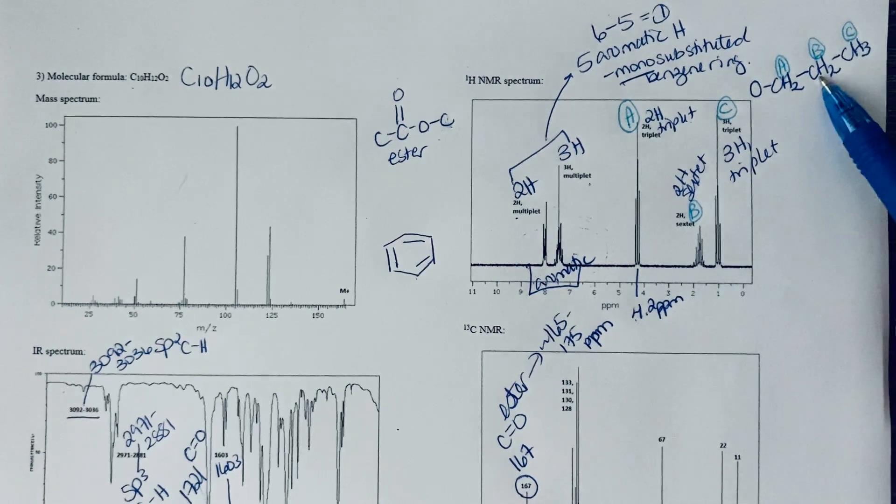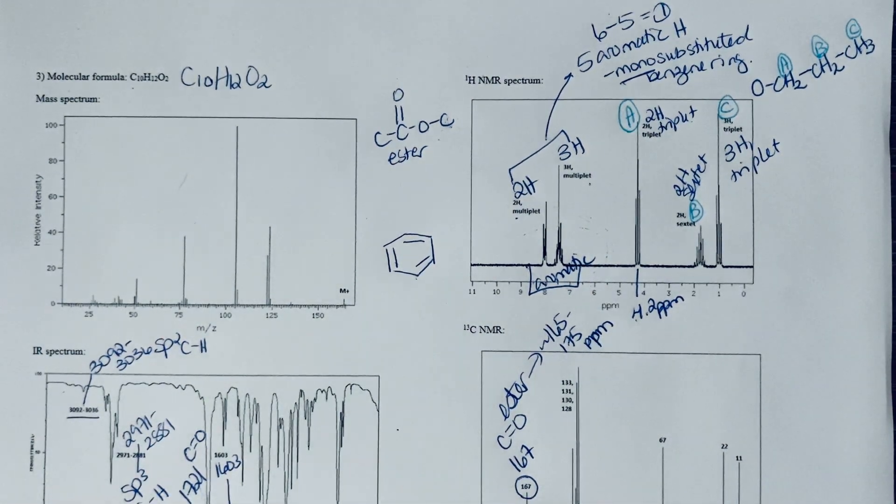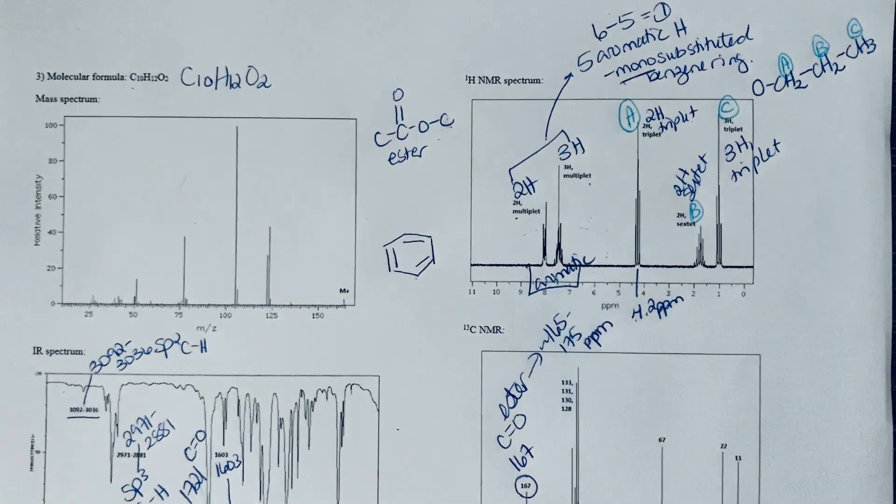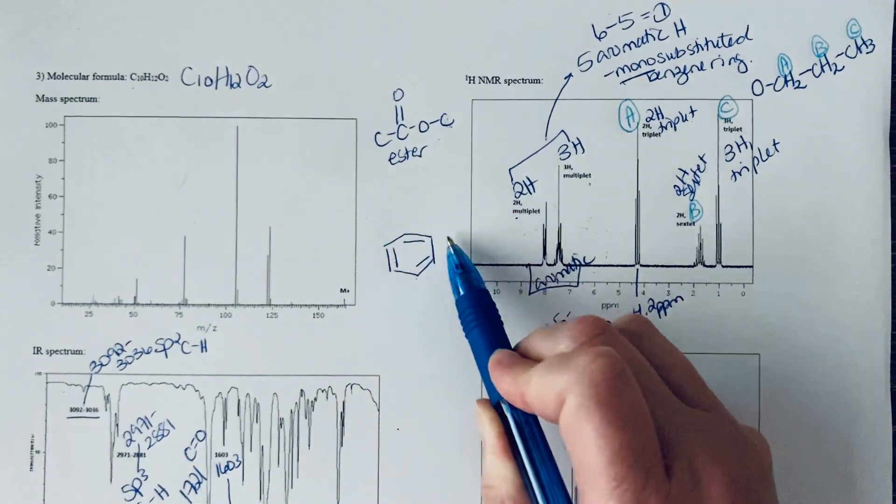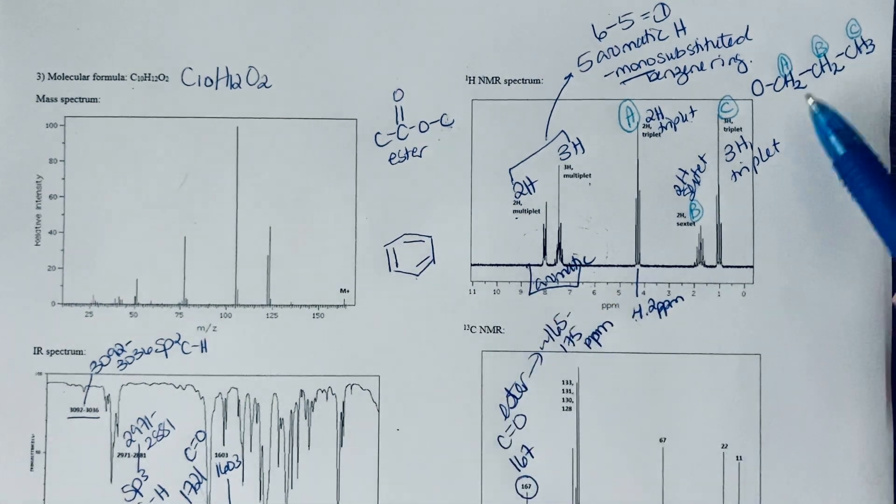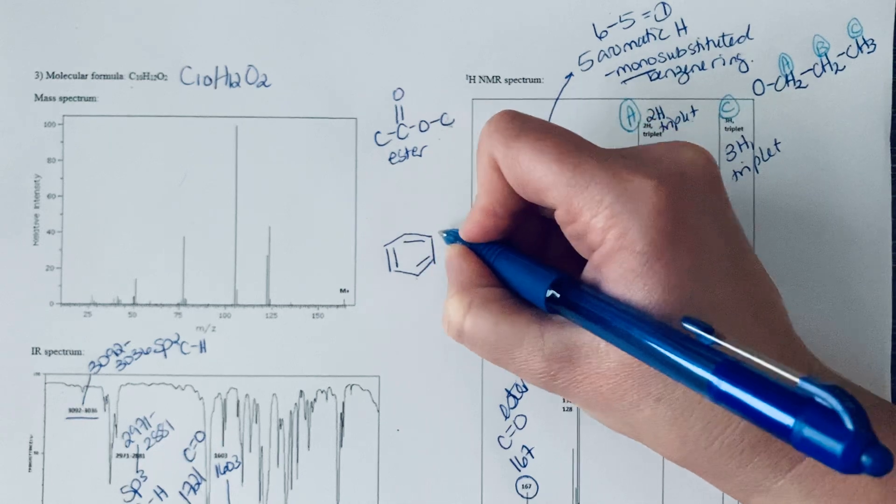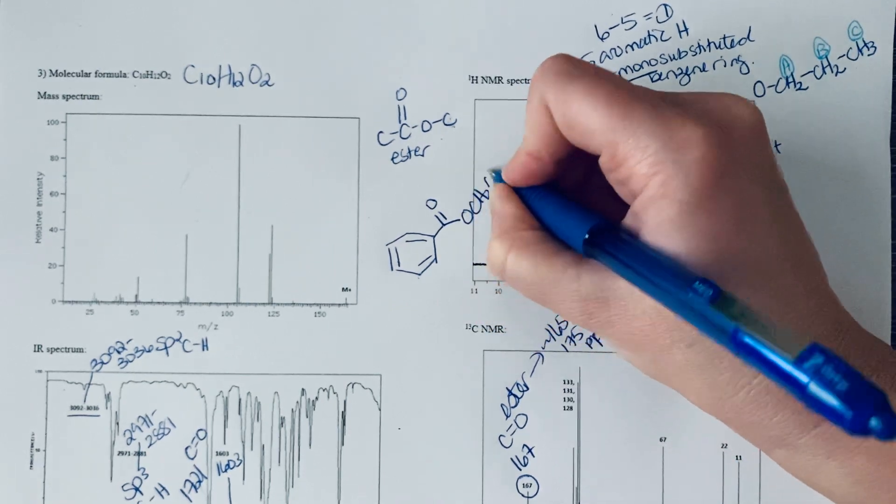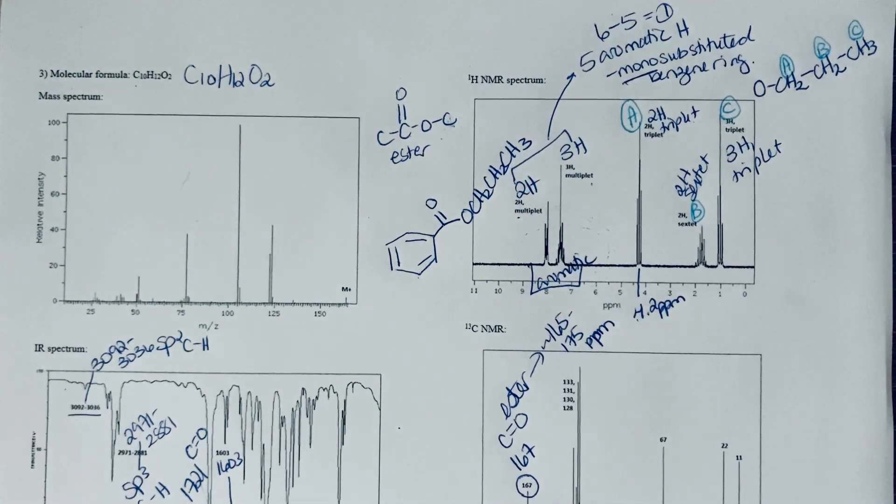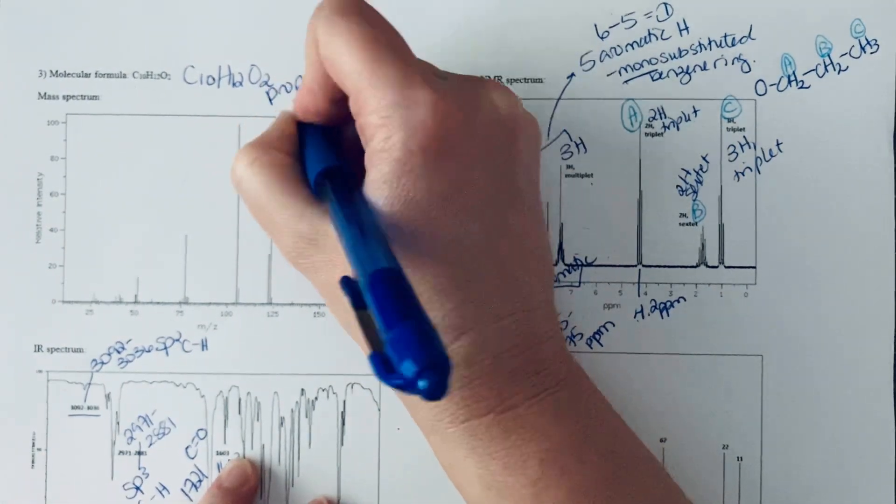We have actually found everything in this molecule. We know that we have a mono-substituted benzene ring, we have an ester, and on the oxygen side of the ester is this chain, which means that on the other side of the ester it's got to be this benzene ring. That accounts for all 10 of our carbon atoms: three here, one for the carbonyl, and six from the benzene ring. Our molecule is propylbenzoate.